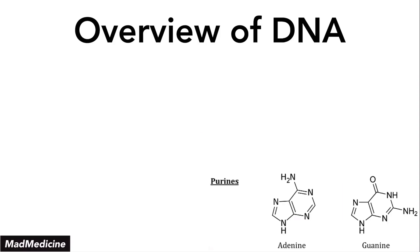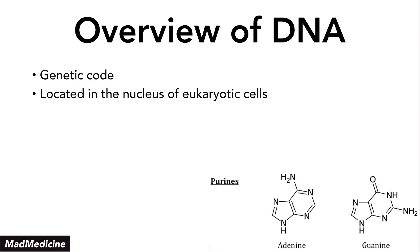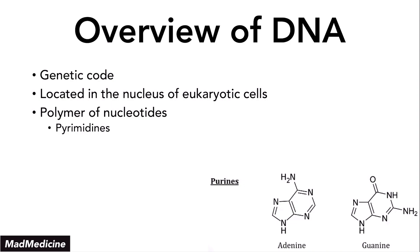Let's dive right in by first doing an overview — a review of DNA. Very simple, very straightforward. DNA is your genetic code and it's located in the nucleus of eukaryotic cells. The DNA itself is a polymer of nucleotides, which are known as pyrimidines and purines.